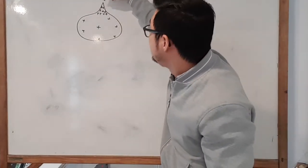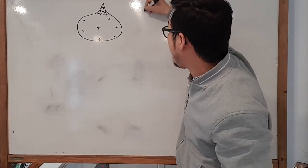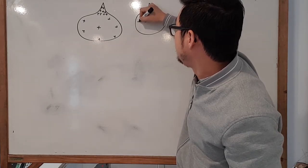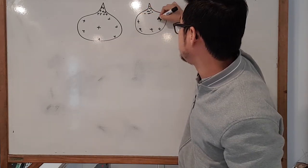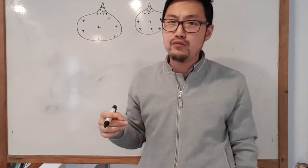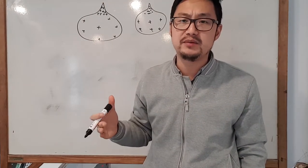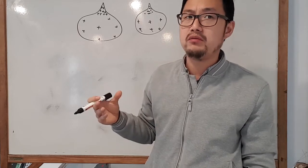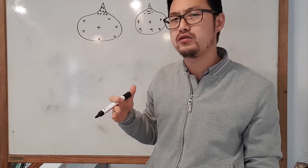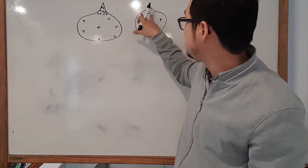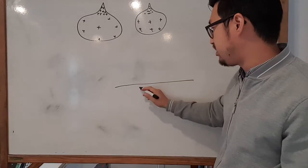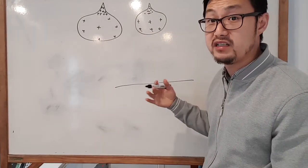Same thing applies if it's negative charge — the most negative charge accumulates at the pointy part. This mostly works with conductors because electrons can move freely. With other materials where electrons can't move, we don't talk about this as much. But mainly this applies to conductors.